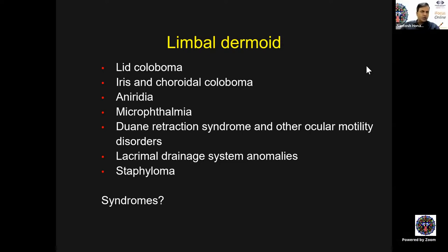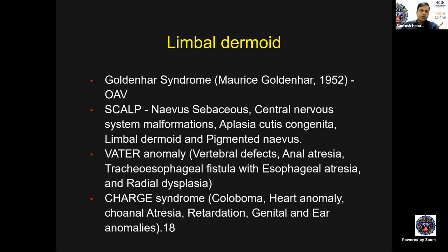Associations of limbal dermoid include lid coloboma, iris and choroidal coloboma, aniridia, microphthalmia, Duane's and related disorders, lacrimal drainage system abnormalities, and staphyloma. Microphthalmia is a direct prognostic indicator — if a child has limbal dermoid with relative microphthalmia, there is a higher chance of mental retardation or delayed milestones. Oculo-auriculo-vertebral dysplasia was described by Maurice Goldenhar, who was a general ophthalmologist.